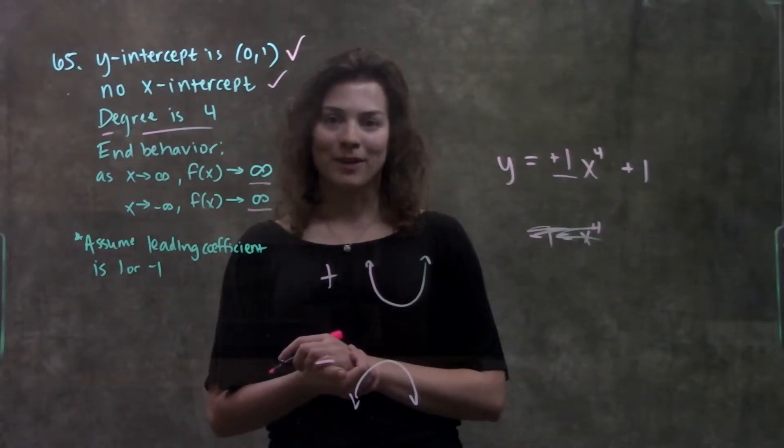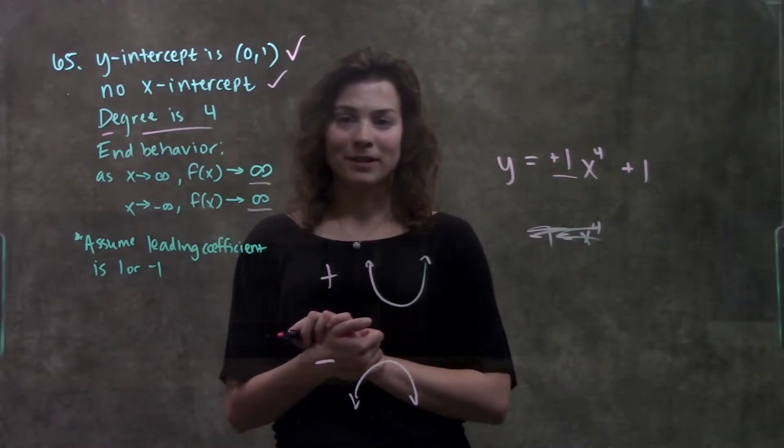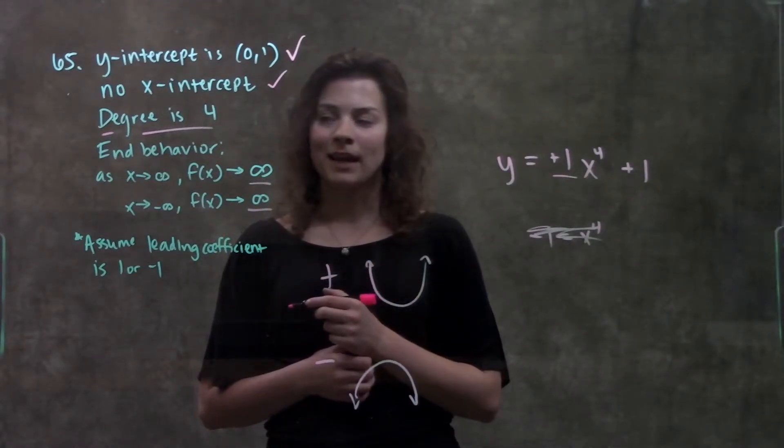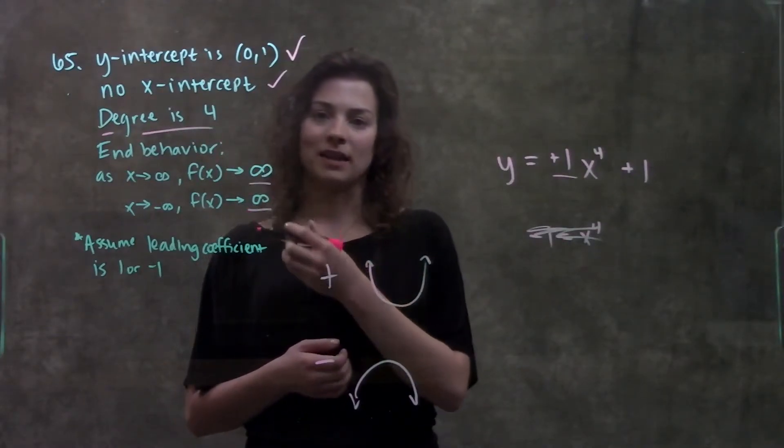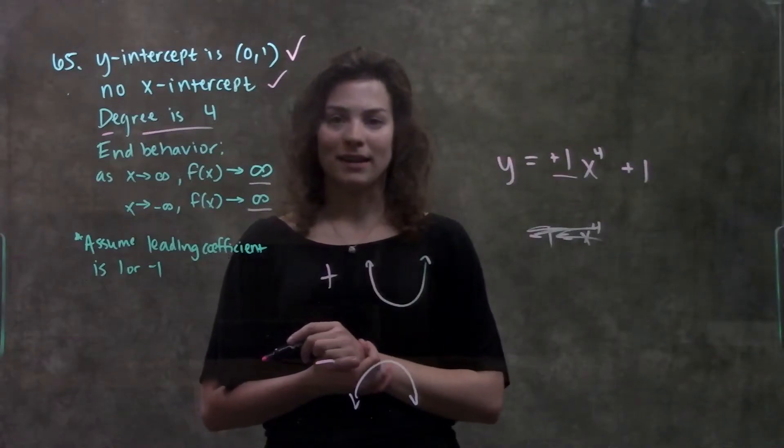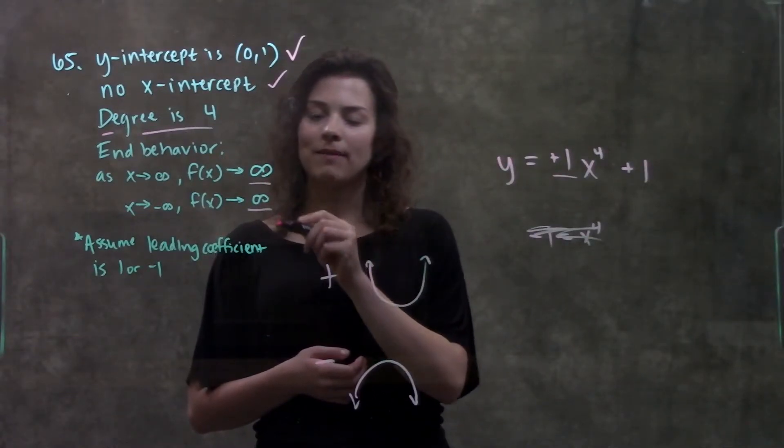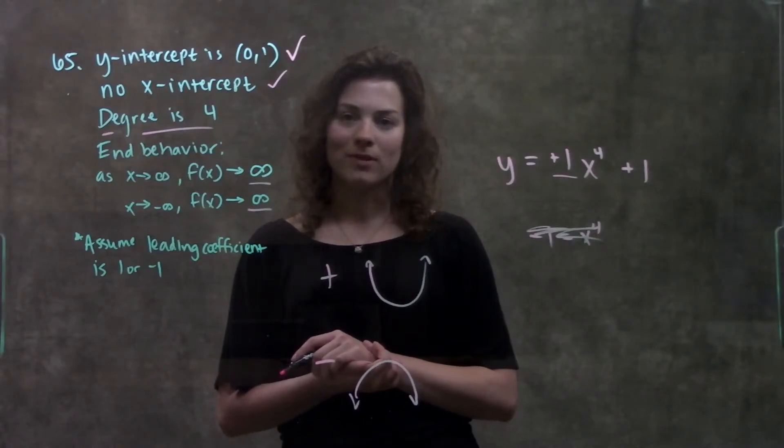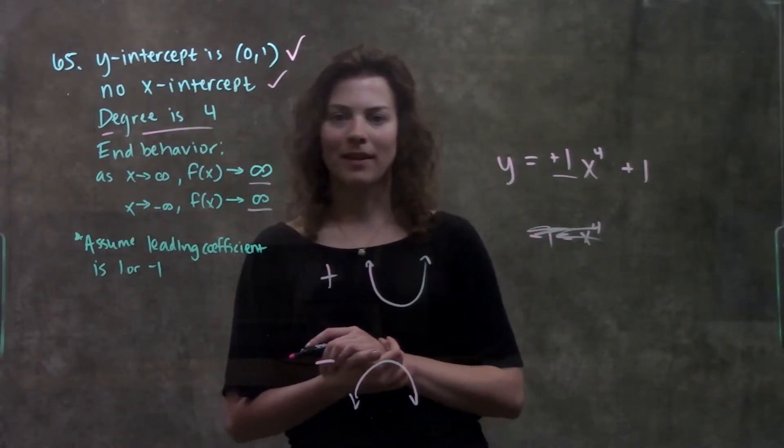And, other than that, that's about it for this problem. So, remember, to solve this type of problem, you just go through each piece of information one step at a time. We started with the degree, because I think that's the biggest piece of information that they told us. And then we just filled in everything else that they told us. For the end behavior part, remember back to that chart that they gave us earlier in the section, if you're having trouble with other problems. But, other than that, that's it.